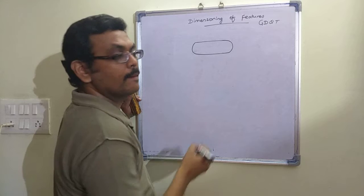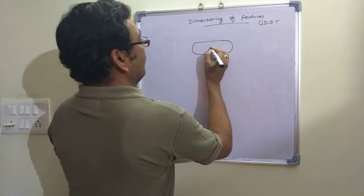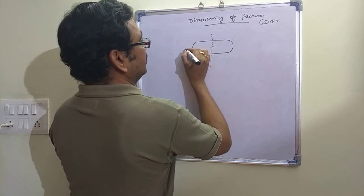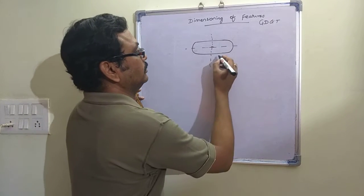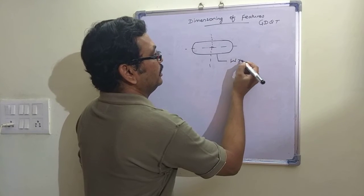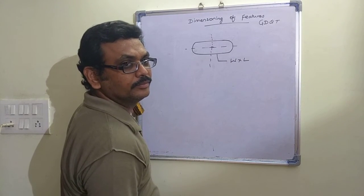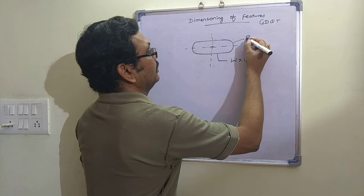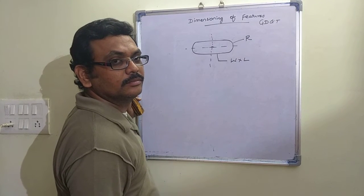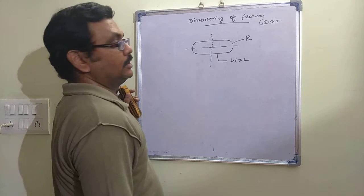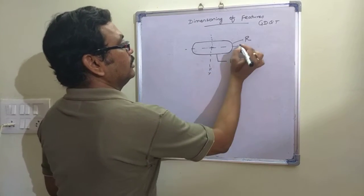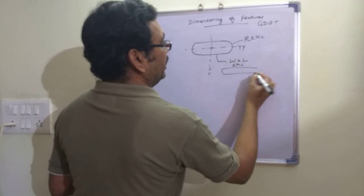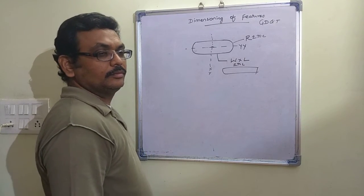For a slot, there are two ways of defining it. The first method is to define the axis, then give width × length dimensions, and specify the position with tolerances including plus/minus and the positional tolerance.